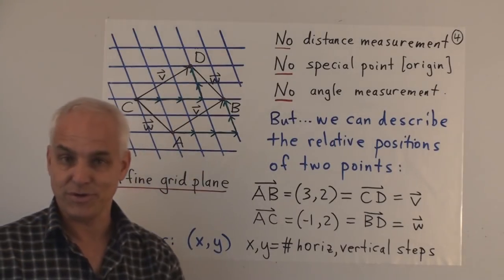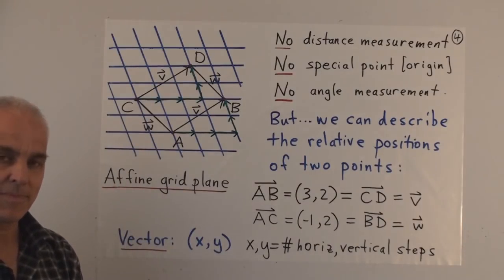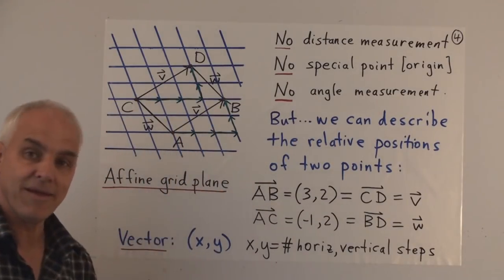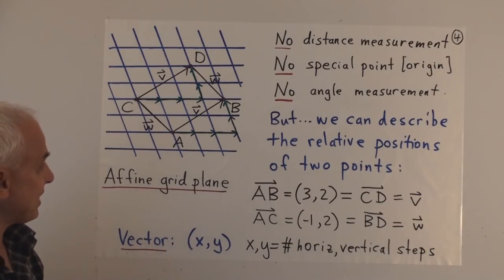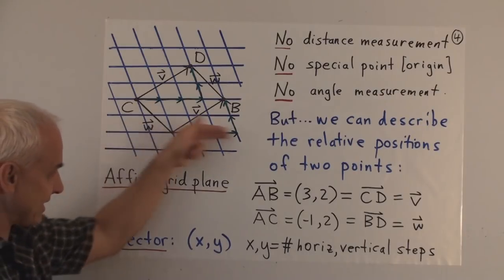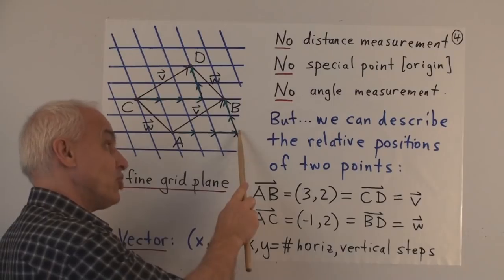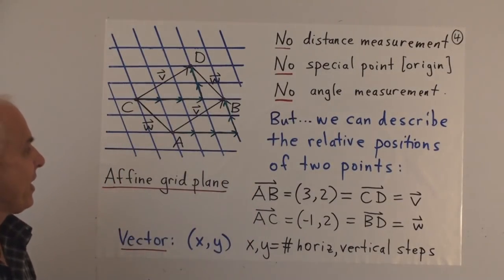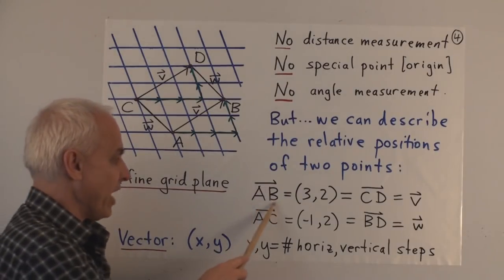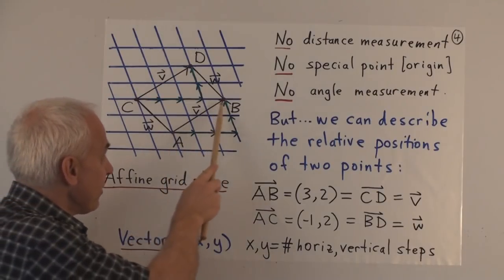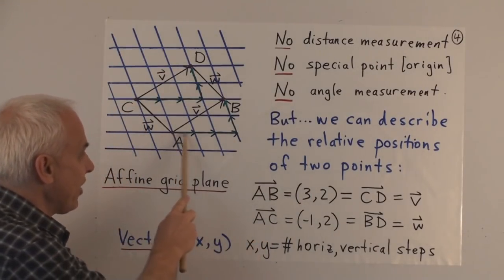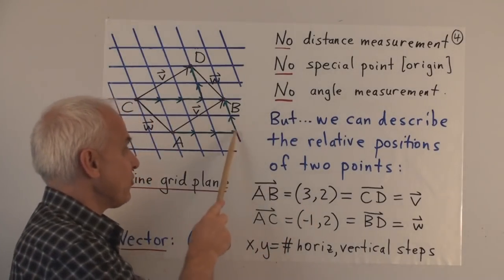There is no special point or origin in this picture, and there are no angle measurements either. What we can do, however, is describe the relative positions of two points — for example, that point A and point B are separated by a series of steps in the directions we've chosen. If we go three steps in this horizontal direction and then two steps up in the vertical direction, that describes the relationship between A and B. We use our vector notation for that.